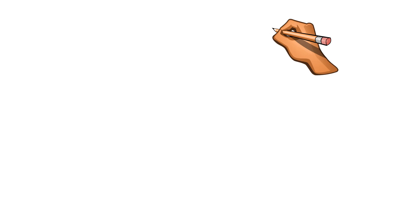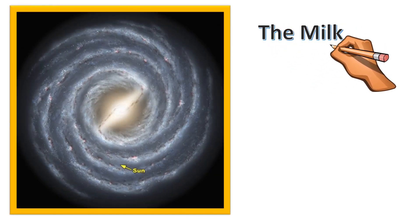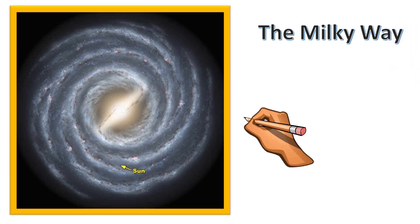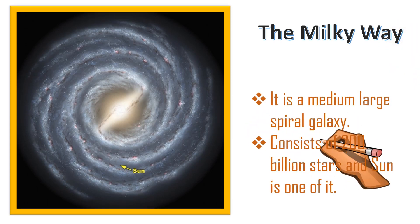Let's learn more about our galaxy, the Milky Way. Milky Way is a medium-large spiral galaxy. You can see its shape. It is spiral. It consists of 200 billion stars and Sun is one of them. And this is the location of our Sun.